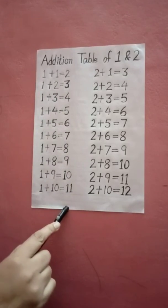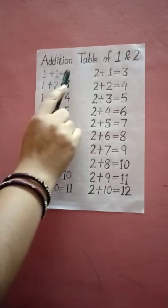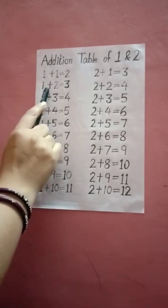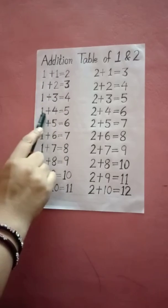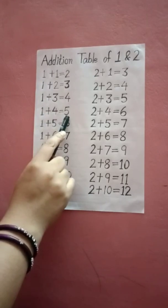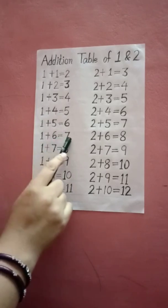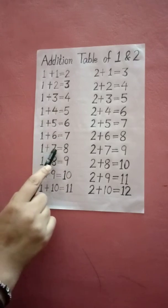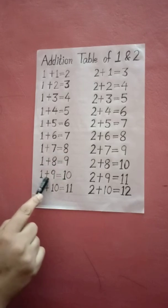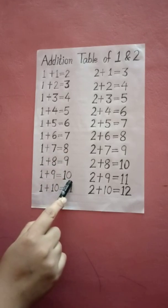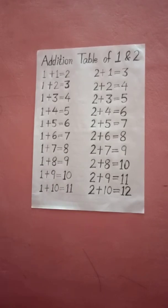So let us see the addition table of 1: 1 plus 1 equals 2, 1 plus 2 equals 3, 1 plus 3 equals 4, 1 plus 4 equals 5, 1 plus 5 equals 6, 1 plus 6 equals 7, 1 plus 7 equals 8, 1 plus 8 equals 9, 1 plus 9 equals 10, and 1 plus 10 equals 11.